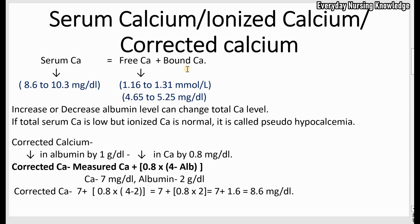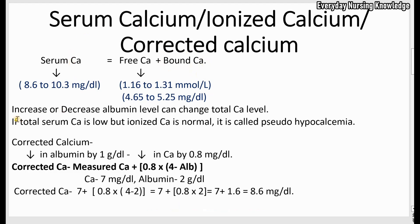If a patient has a low albumin level, it can decrease the bound calcium level, because bound calcium is calcium bound to protein — primarily to albumin. So if bound calcium decreases, it decreases the serum calcium level. An increase or decrease in albumin can change the total calcium level. If the serum calcium is low but the ionized calcium is normal, it is called pseudo-hypocalcemia — not due to true low calcium, but due to low albumin.